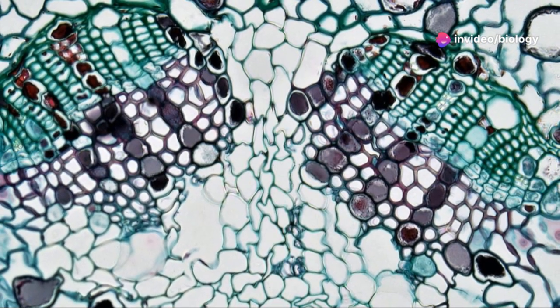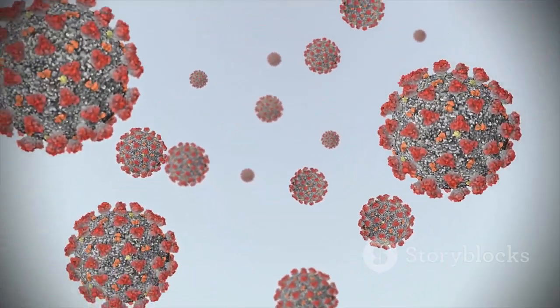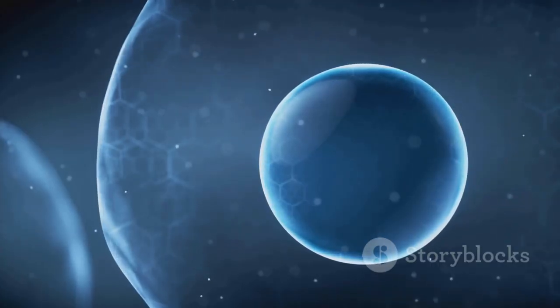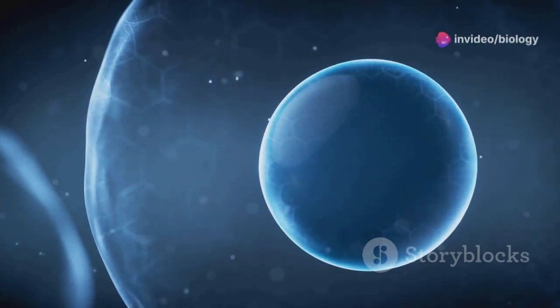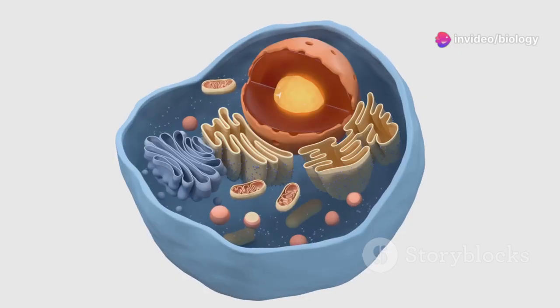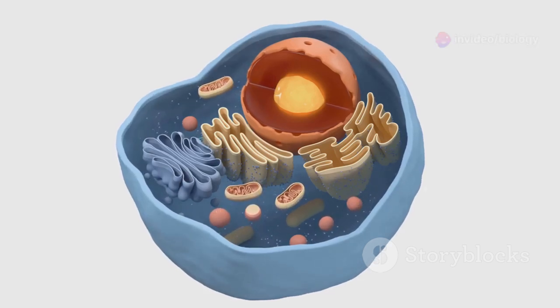Eukaryotic cells are found in plants, animals, fungi, and protists - you name it, they're everywhere. They have a whole network of internal membranes that form specialized compartments called organelles. Each organelle has a specific job, like producing energy, synthesizing proteins, or breaking down waste.